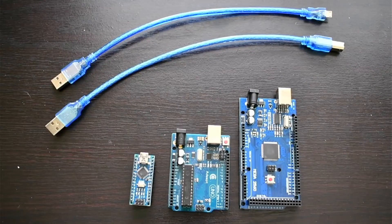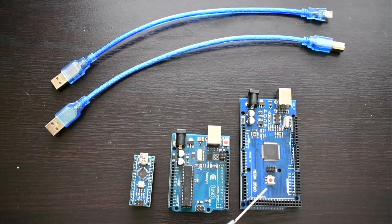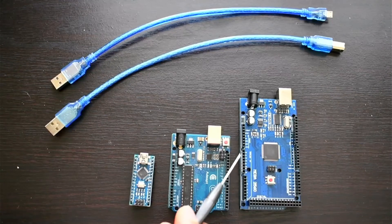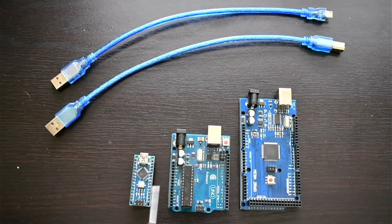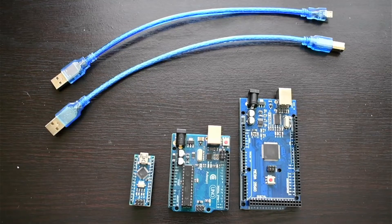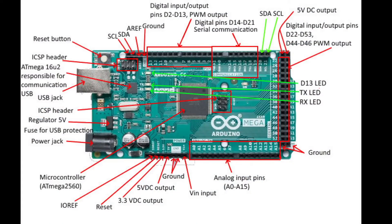Then we have the biggest Arduino, which is the Arduino Mega. It has 32MB of memory and many more pins. These two — the Nano and Uno — have similar pin footprints, but the Mega has almost double the pins of the Arduino Uno. If we see the diagram, we have analog pins from A0 to A15, which is almost triple the number on the other Arduinos.